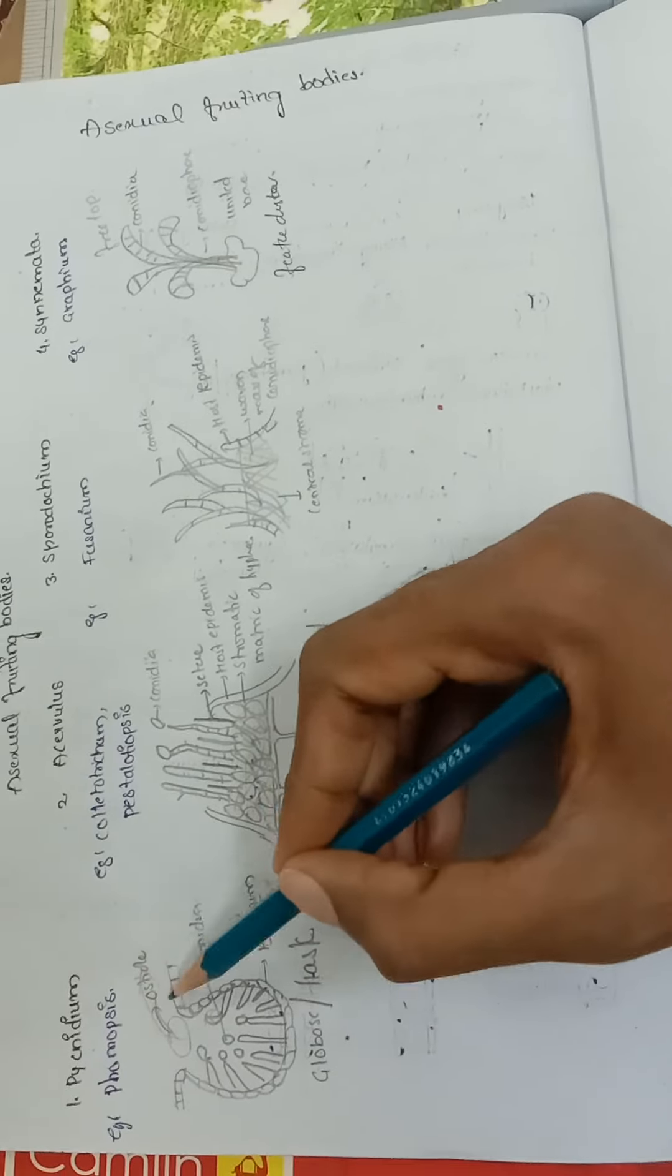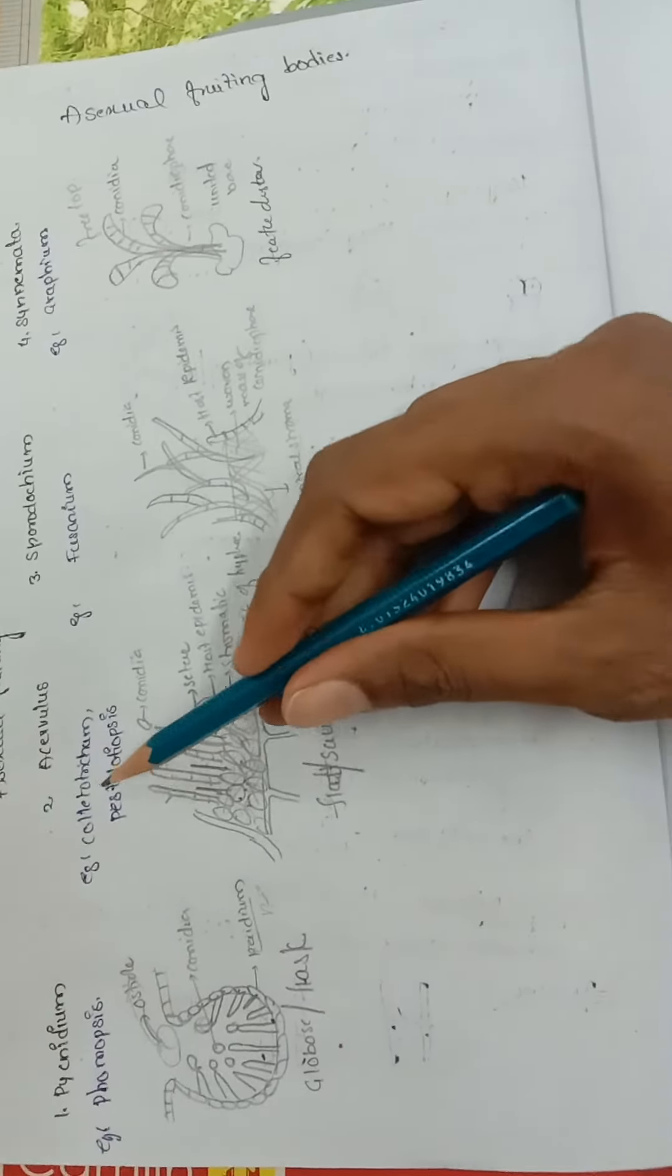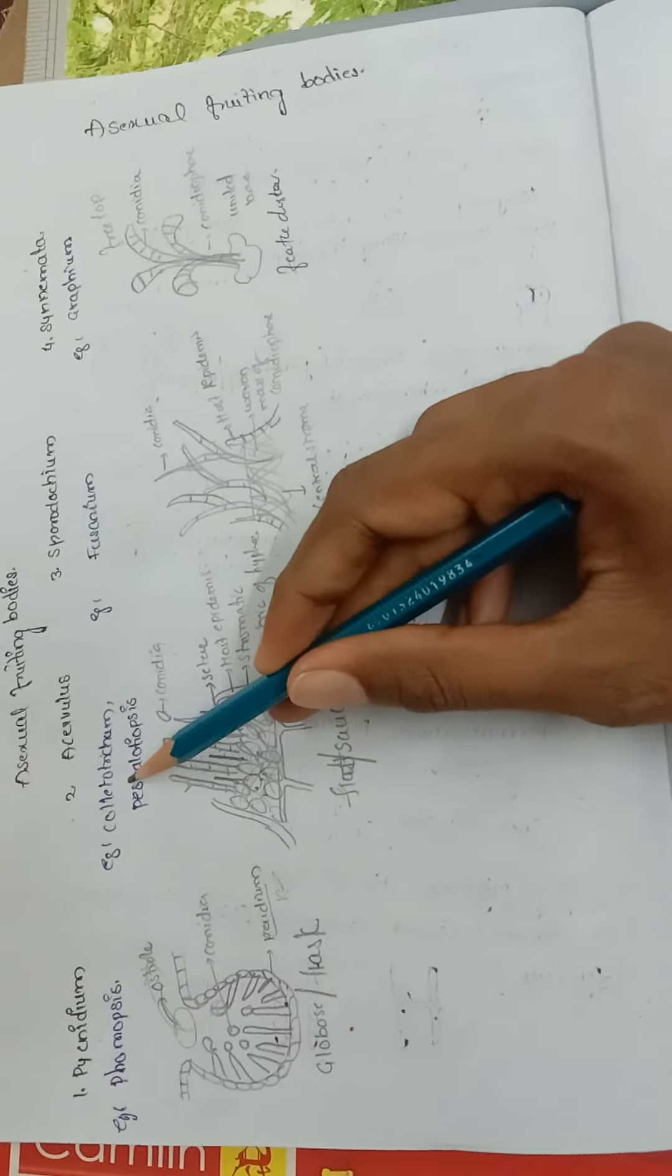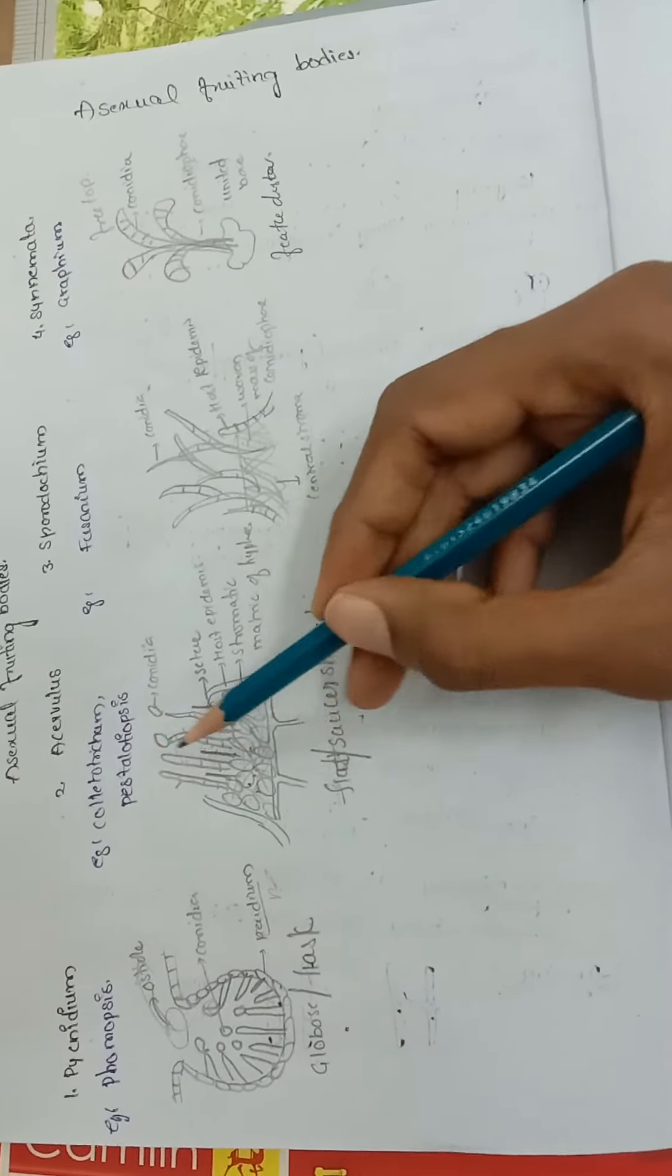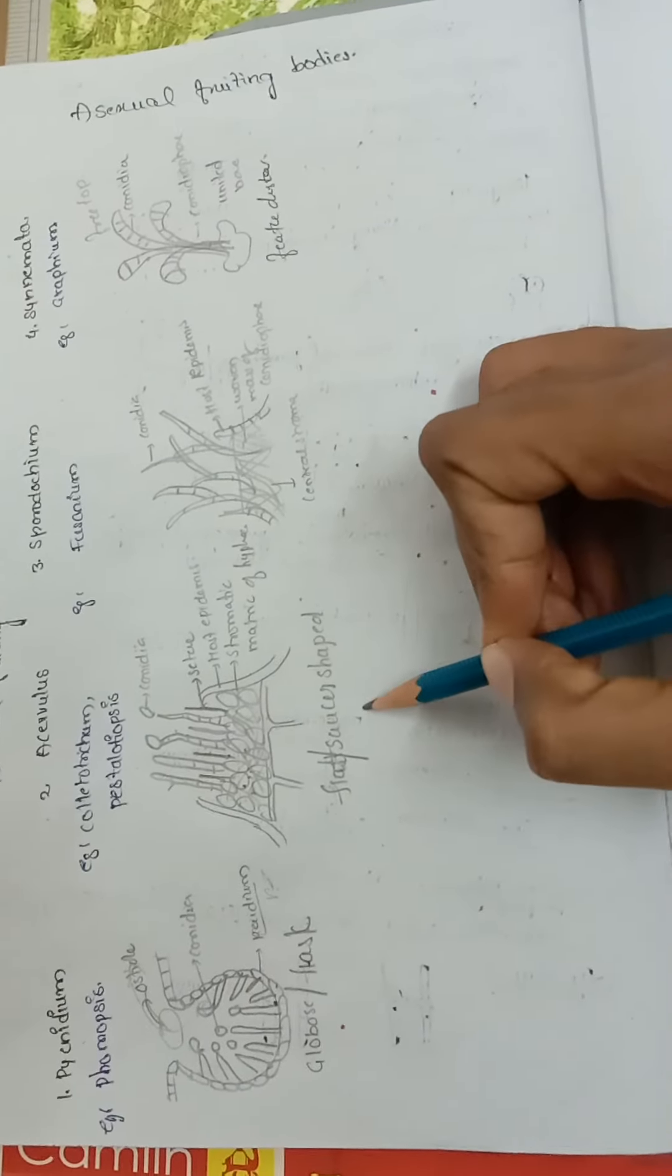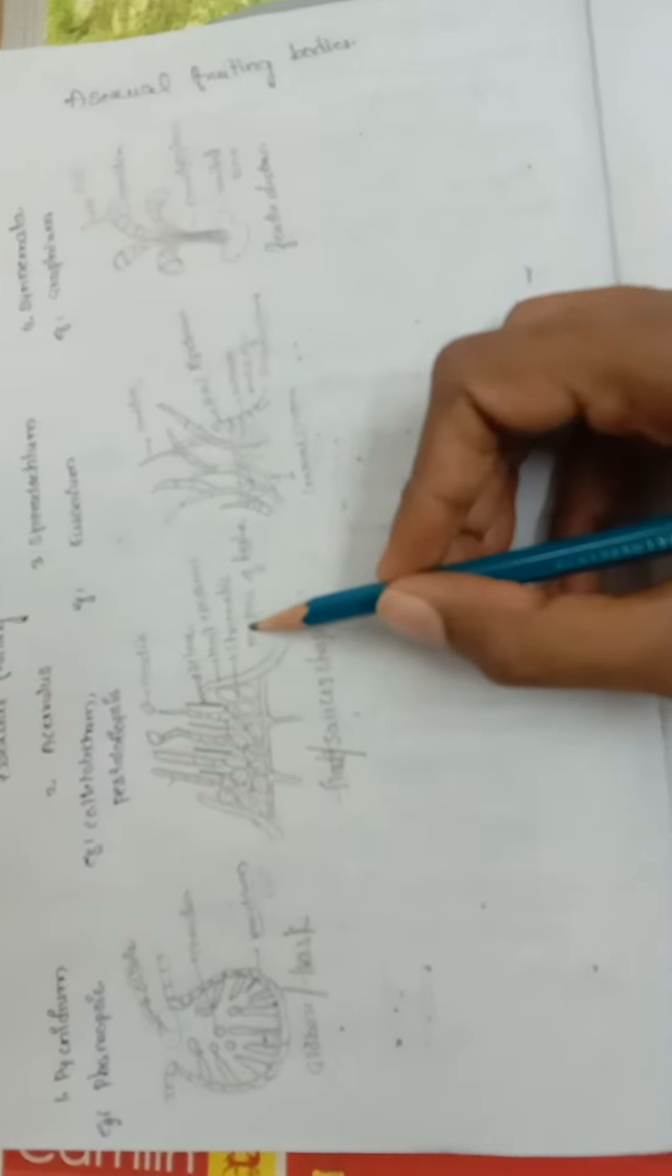Acervulus: examples include Colletotrichum and Pestalotiopsis. It is flat-shaped or saucer-shaped and the somatic matrix of hyphae.